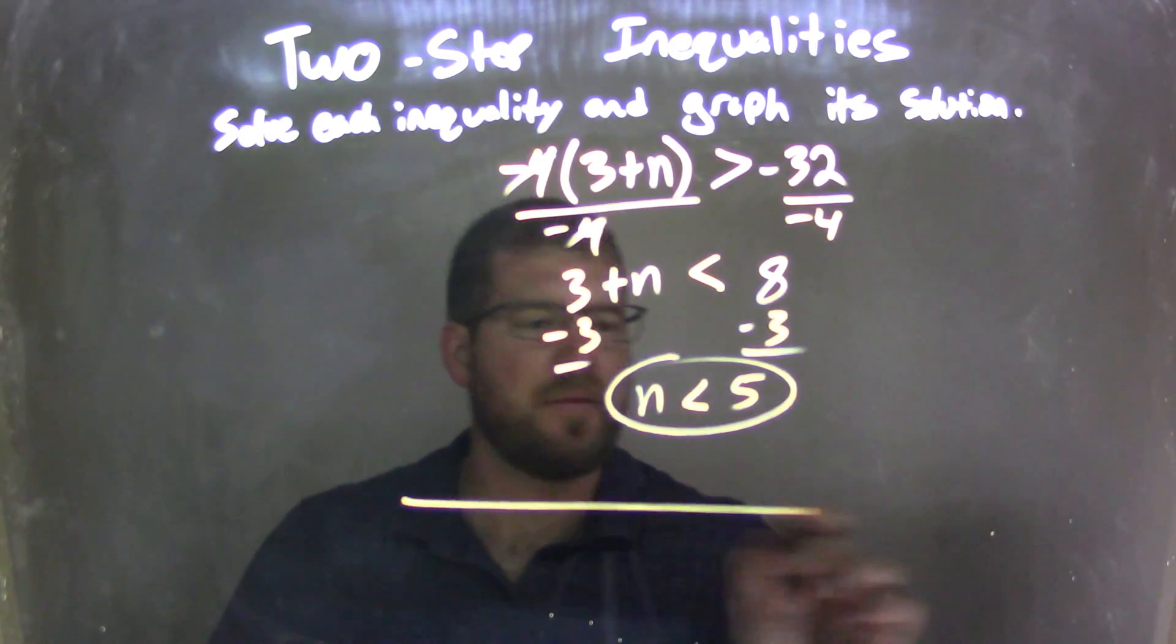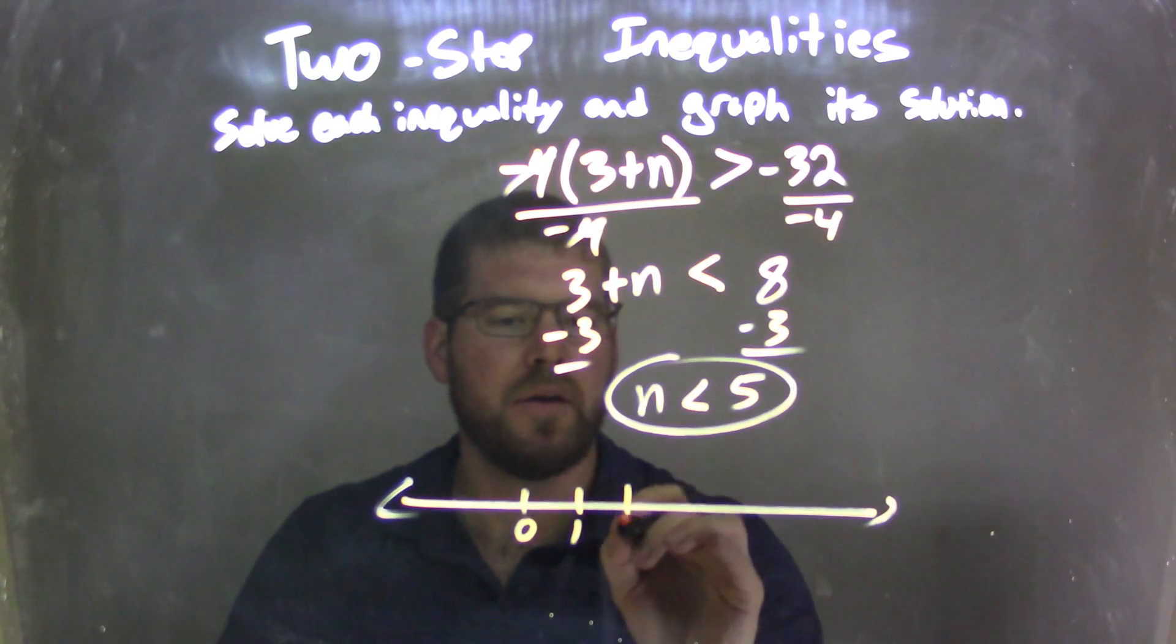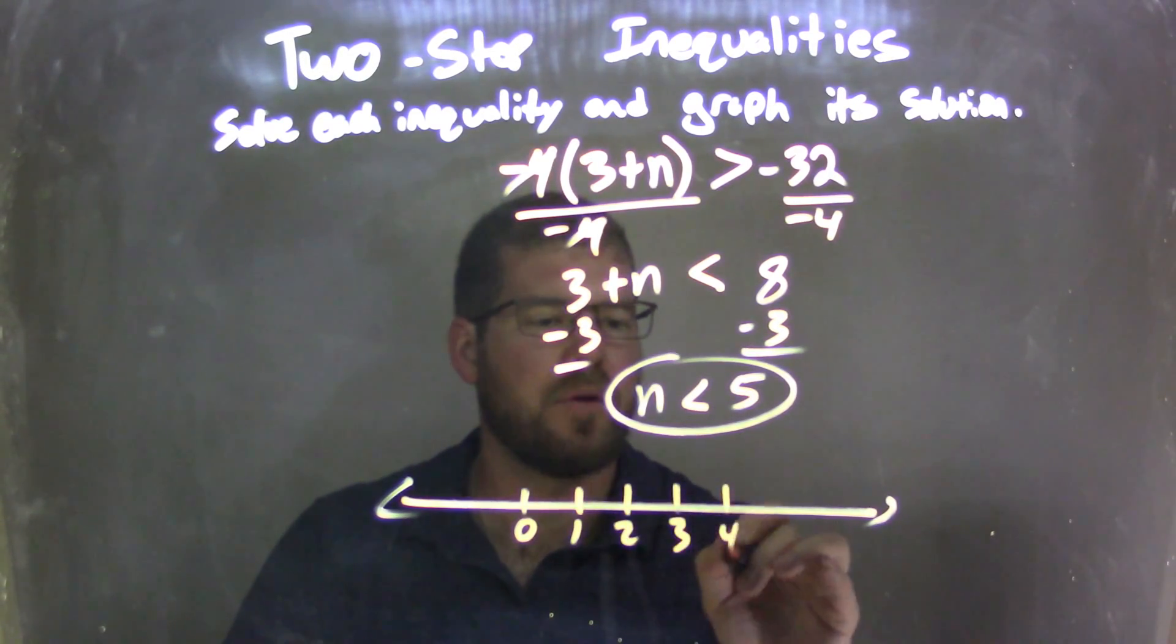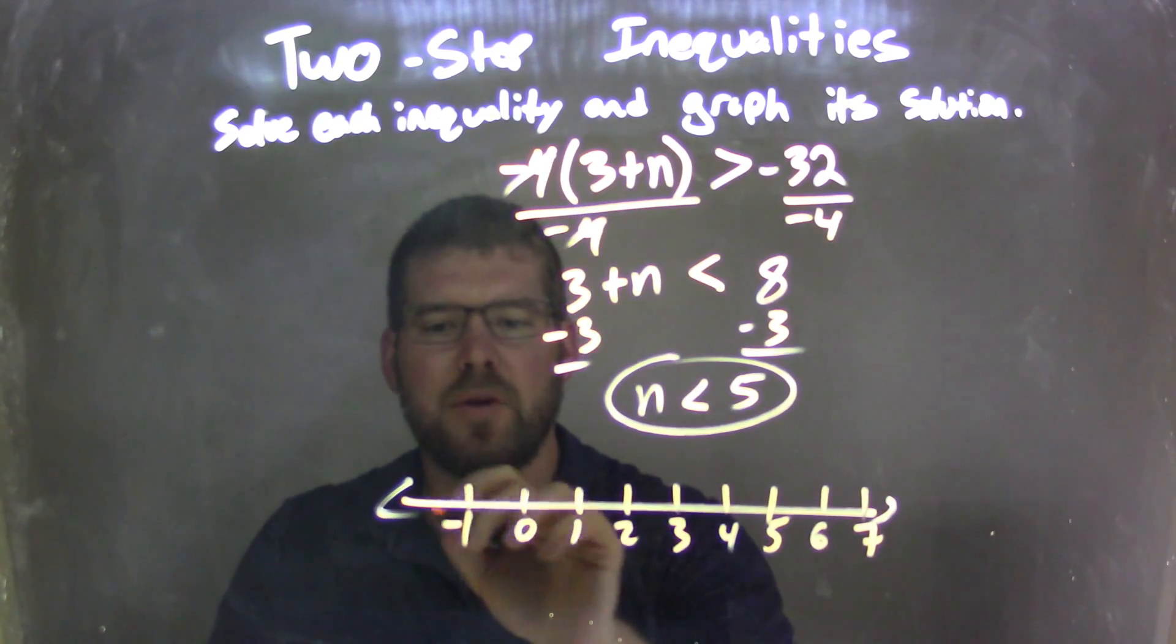So now I need to graph that. Take my number line here. Let's go by 1, 0, 1, 2, 3, 4, 5, 6, 7, and we have a negative 1 and a negative 2 here.